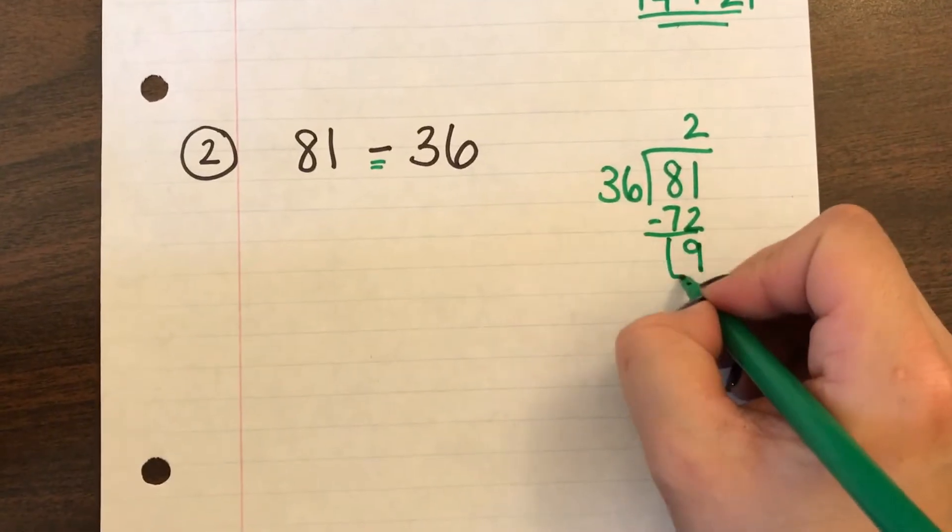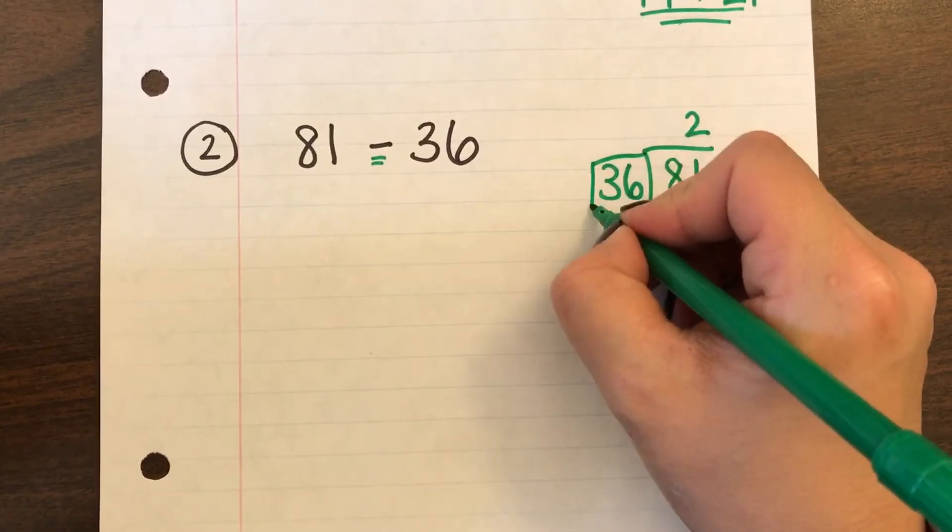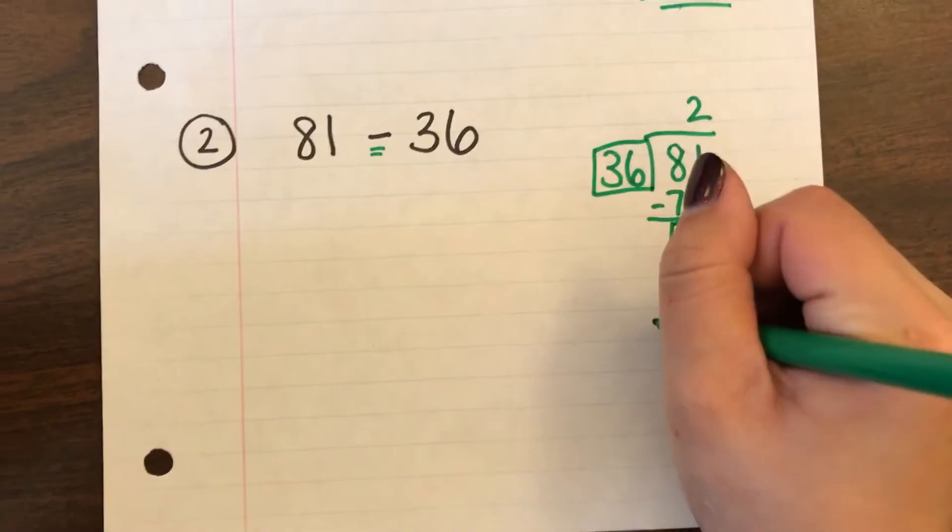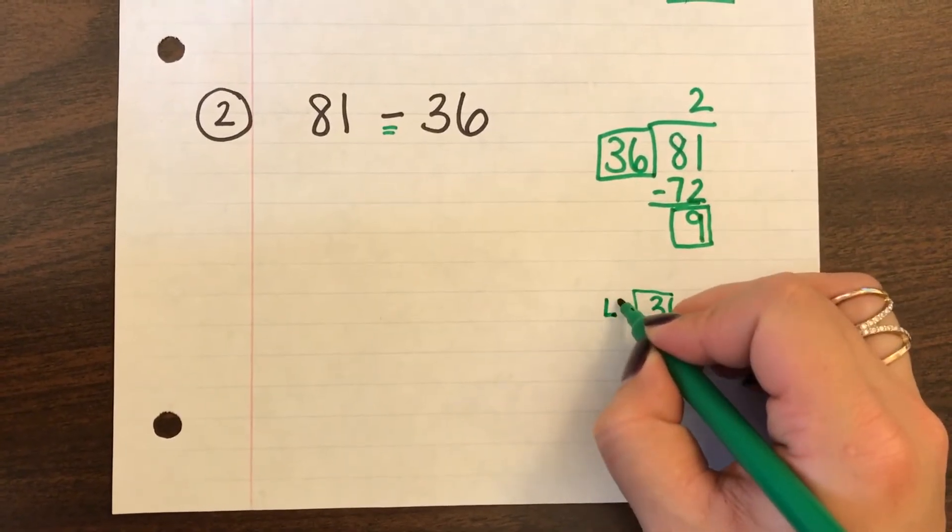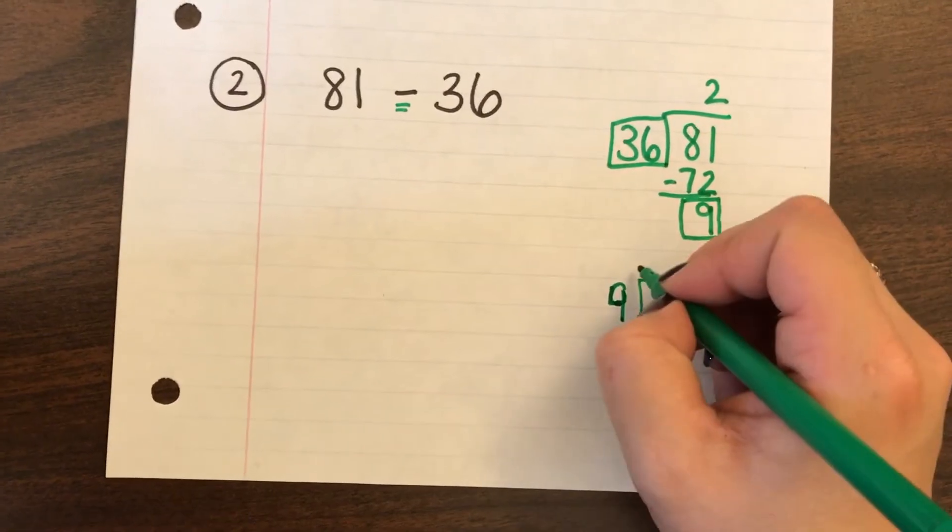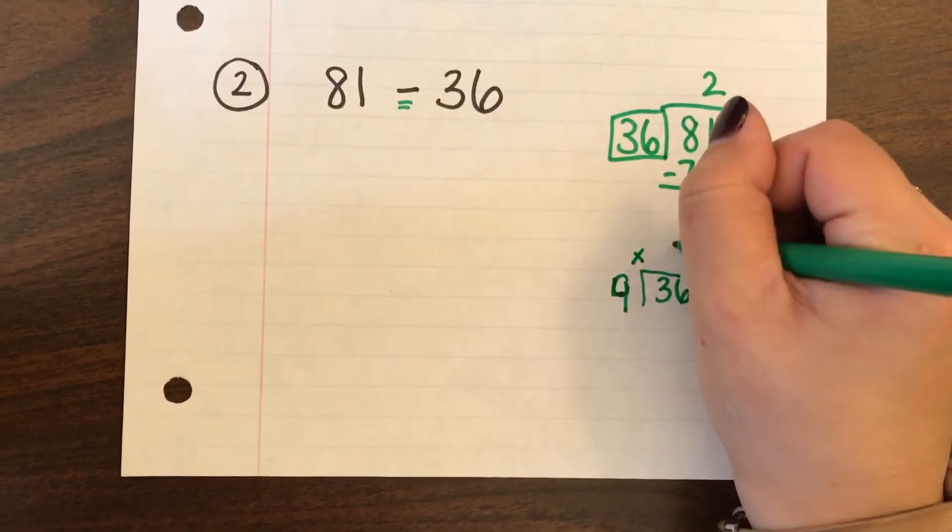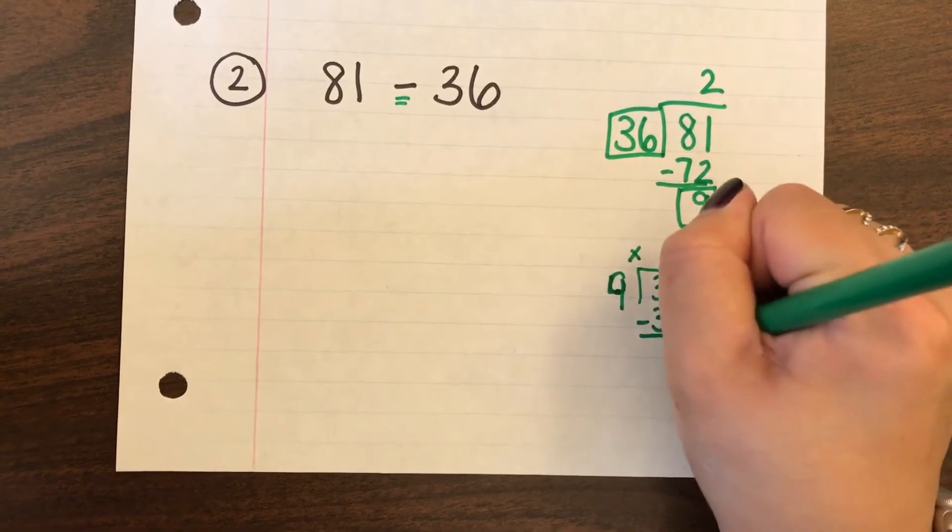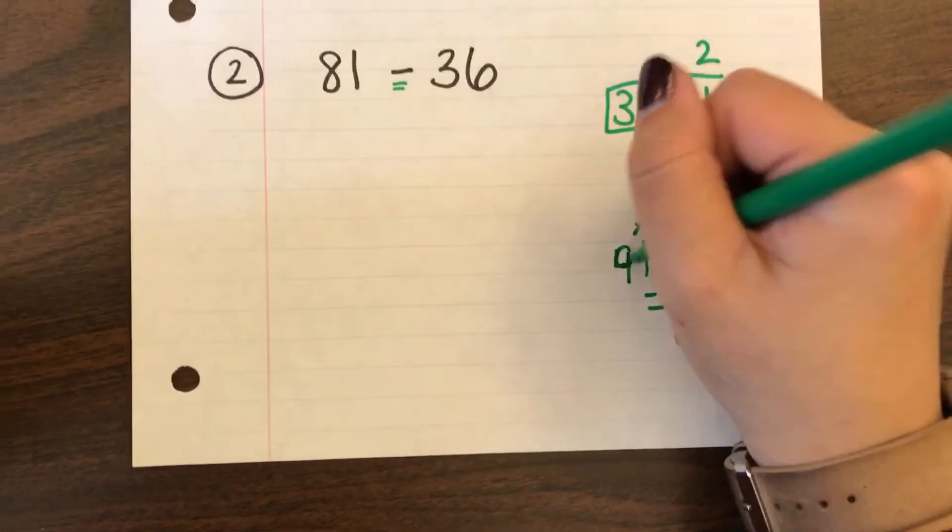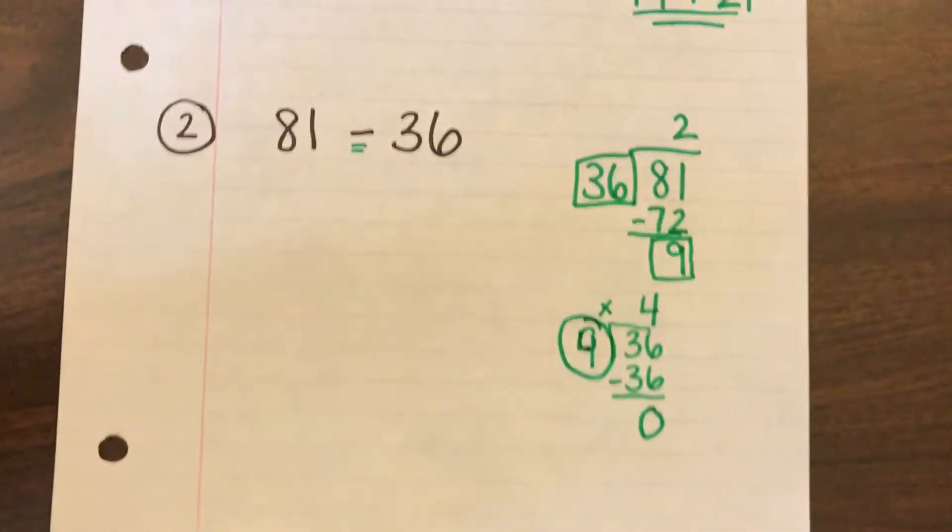Okay so since I have to keep going because I don't have 0 as my remainder. I'm going to divide 36 by 9. I know it can go in four times. And since I have 0 left over I know that I can use my 9.